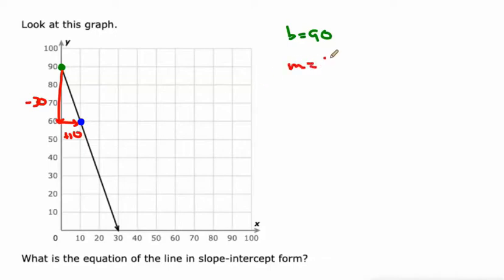We use that ratio of negative 30 over 10, which obviously we want to simplify to negative 3. And then we can write our equation y equals negative 3 times x plus 90. So y equals mx plus b.